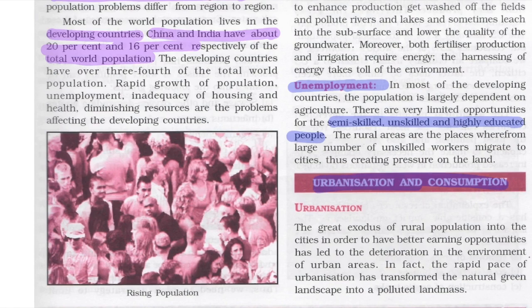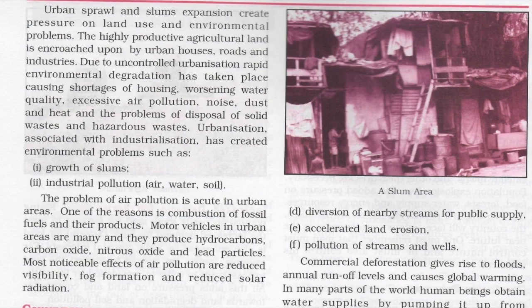The major rural population moving to cities in search of better earning opportunities has led to deterioration in the environment of urban areas. This pace of urbanization has transformed the natural green landscape into a polluted landmass. Urban sprawl and slum expansion have created pressure on land use as well as environmental problems. Highly productive agricultural land is being used for urban houses, roads, and industries, causing uncontrolled environmental degradation.